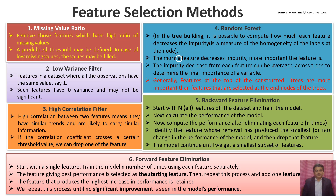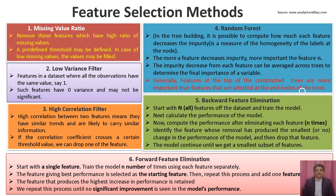The next method is random forest, which can also be used for feature selection. In tree building, it is possible to compute how much each feature decreases the impurity. Impurity is a measure of the homogeneity of labels at the node — the more a feature decreases impurity, the more important it is. The impurity decrease from each feature can be averaged across trees to determine the final importance of a variable. Generally, features at the top of the constructed tree are more important than features selected at the end nodes.